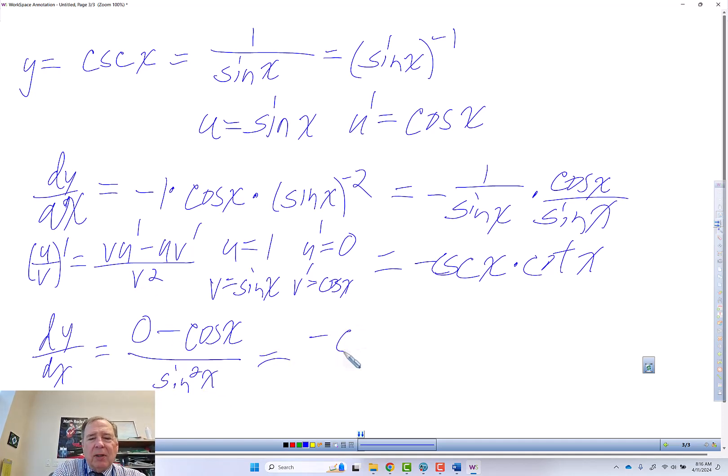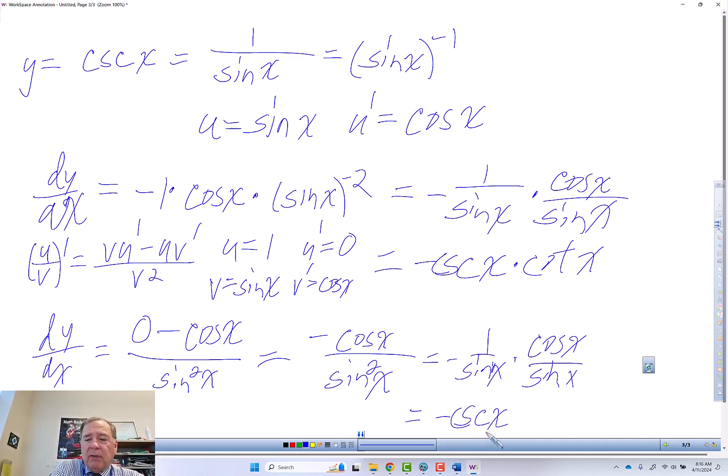And you can see we get to the same place. So we've got negative 1 over sine of x times cosine of x over sine of x, which is negative cosecant of x times cotangent of x.